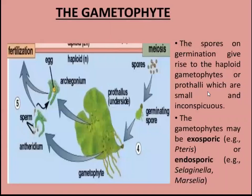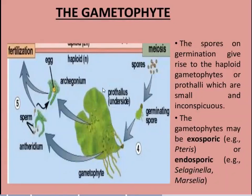So this is the gametophyte stage. This can be the sporophyte. So the spores germinate and the haploid gametophyte is the prothallus.